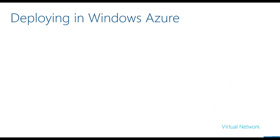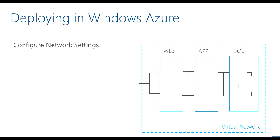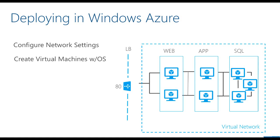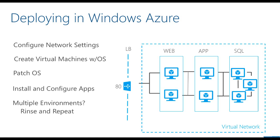Moving directly to the cloud — what does deploying in Windows Azure buy you? When you configure network settings, you're not configuring physical devices or running cable. You're just configuring a virtual network using a web browser. When you create virtual machines, you select the operating system that comes with it, so you skip the OS install piece. You're still patching the OS, managing it, and installing and configuring applications. But so much is taken care of by the platform.